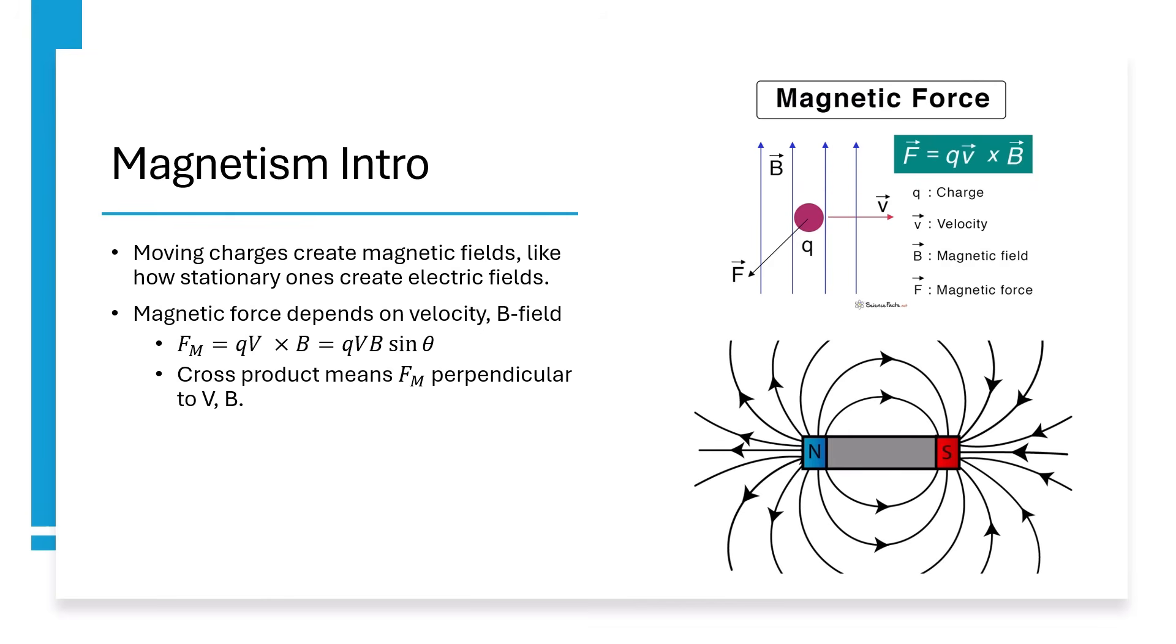Because of how a cross product is defined, magnetic force is always perpendicular to both velocity and B-field, as we can see in our top picture. This equation is what defines the B-field. In the bottom picture, we see an example of B-field for a bar magnet.